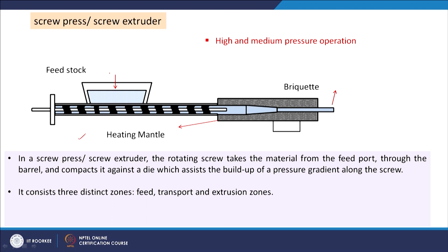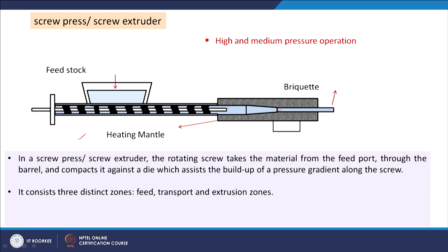In the screw press, feedstock is fed in and the rotating screw moves materials forward toward a die where pressure is developed. The high pressure forces the briquette out through the die arrangement where diameter decreases. The rotating screw takes the material from the feed port through the barrel and compacts it against a die, which assists the buildup of a pressure gradient along the screw.